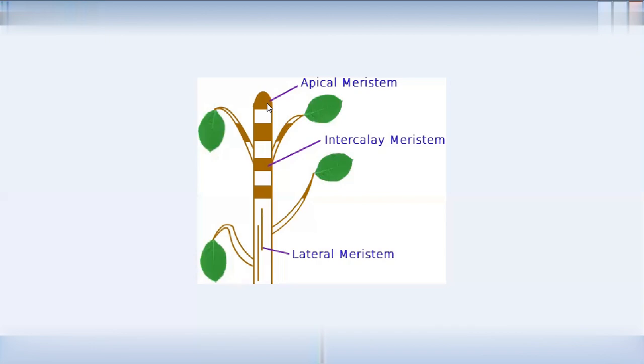If we convert that capacity, then we have de-differentiation. Examples of de-differentiation include inter-fascicular cambia, cambium ring, and cork cambia. These are examples of permanent cells regaining meristematic capacity.